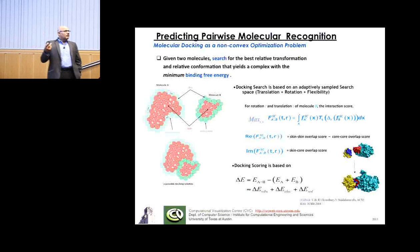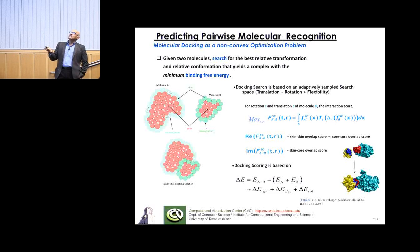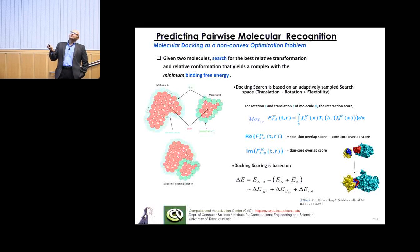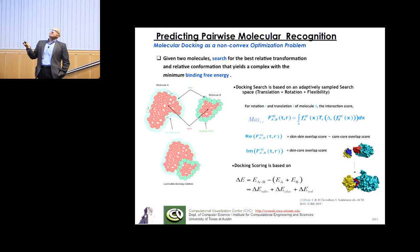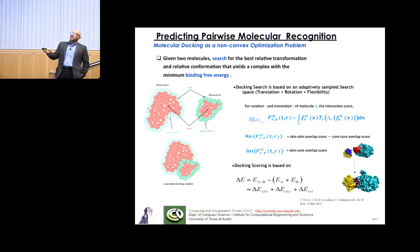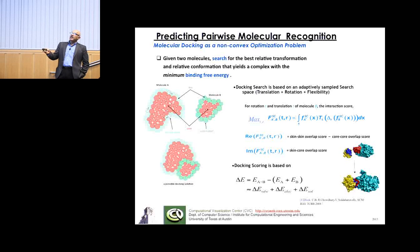The two-body problem is well-known in structural bioinformatics - that's the molecular docking problem. Given two molecules, can you search for the best relative transformation and conformation that yields a complex with minimum binding free energy? The scoring function is optimizing what we call the relative binding energy or relative free energy of the molecule. The delta E - or delta G - is the scoring function for the complex minus the scoring function of each individual component.